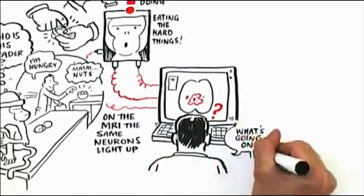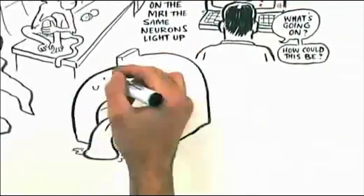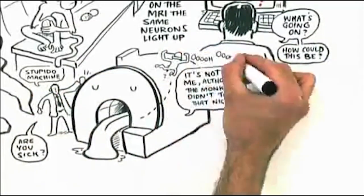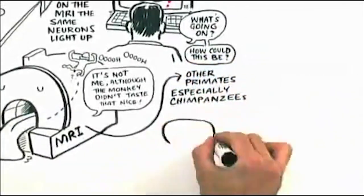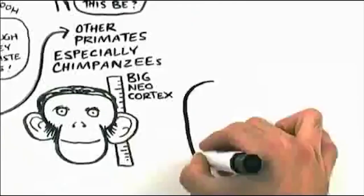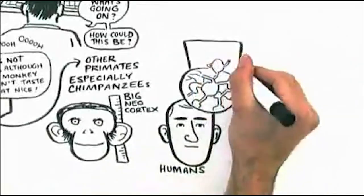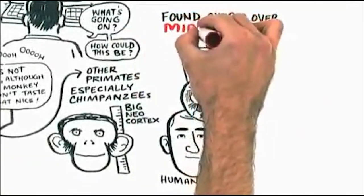And the scientists had not a clue as to what this was. They thought the MRI machine had broken. They then began to put MRI brain scanning machines on other primates, especially chimpanzees with our big neocortex. Then they went to humans. And what they found over and over again is something called mirror neurons.